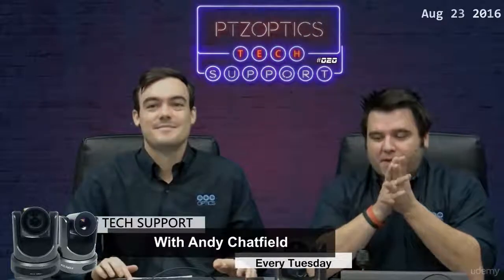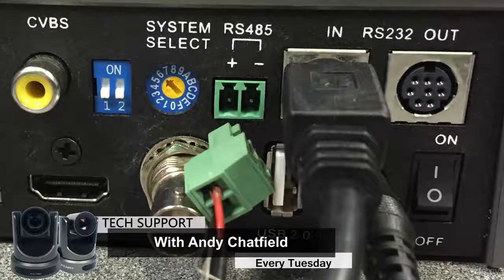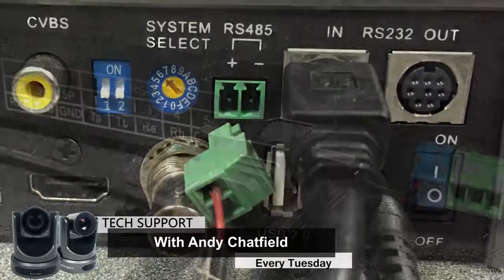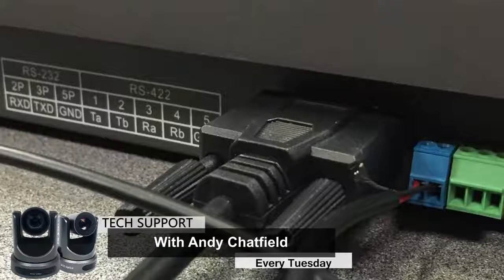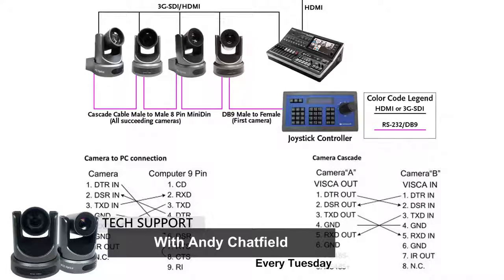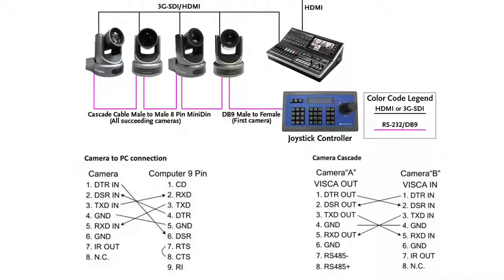We're going to talk about the differences between RS-232 and RS-485, and a little bit of RS-422 as well, even though the cameras don't do that. So what is RS-232? What is RS-485? What are the differences? Why do you use one over the other? Basically RS-232 is the standard for serial control in this industry. It consists of essentially three cables: transmit, receive, and ground. For the most part, it's receive, transmit, and ground. It's been around since 1962 and is very widely used.